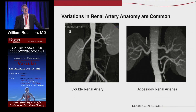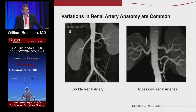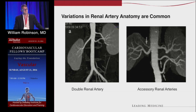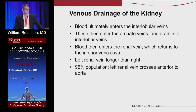Variations in renal artery anatomy are exceedingly common. When planning an aortic operation — either for occlusive disease or aneurysm disease — you need to look at the pattern of double and accessory renal arteries. You have to make a judgment as to whether they are supplying a significant amount of parenchyma on either kidney, because that tells you whether they can be sacrificed as part of an EVAR or an open aorta-bifemoral operation.